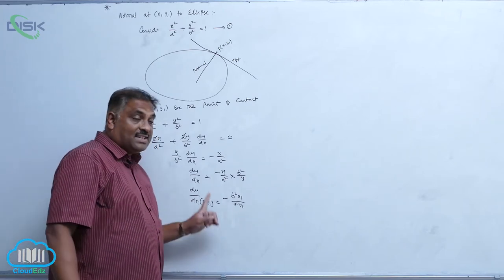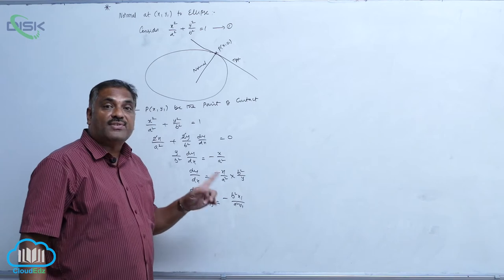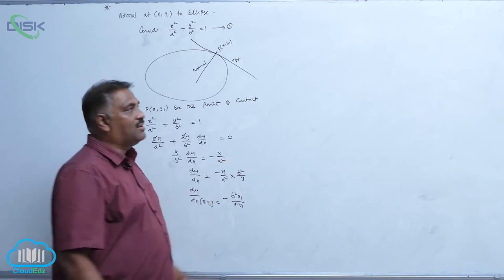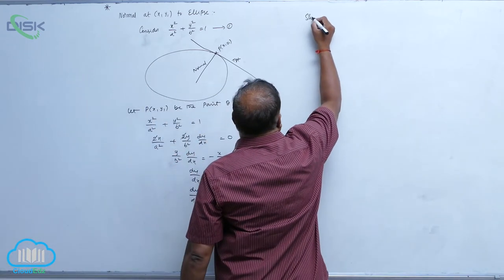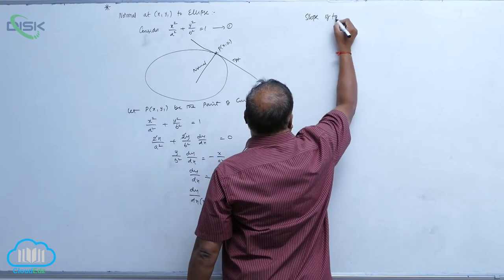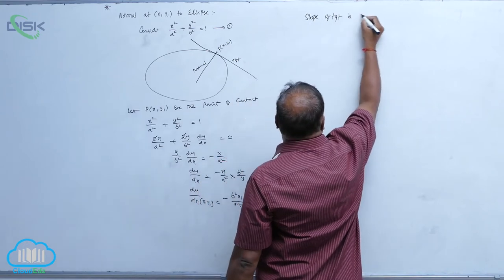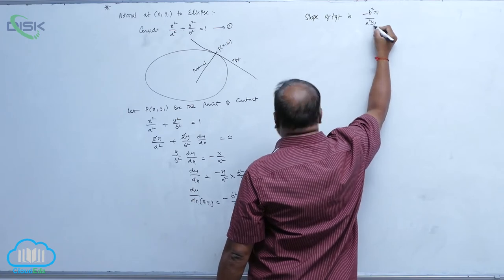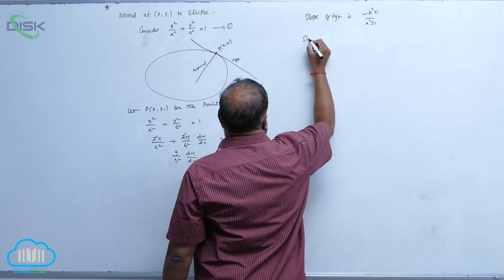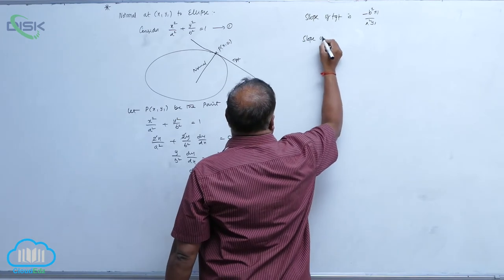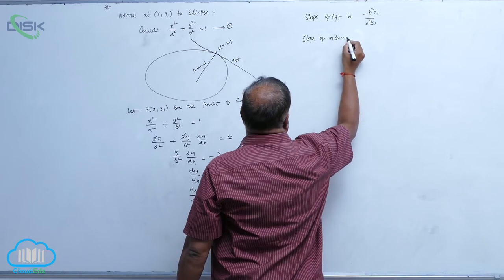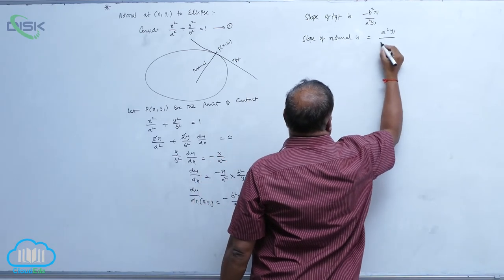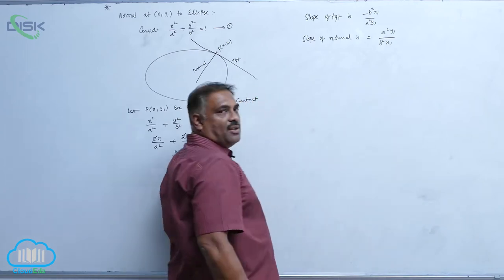Remember, this is the slope of the tangent. We require the slope of the normal. The slope of the tangent is −b²x₁ / (a²y₁). The slope of the normal is therefore a²y₁ / (b²x₁).